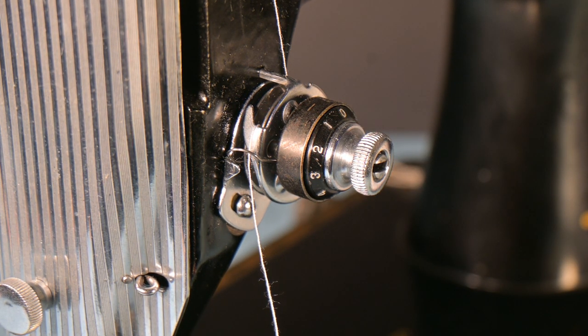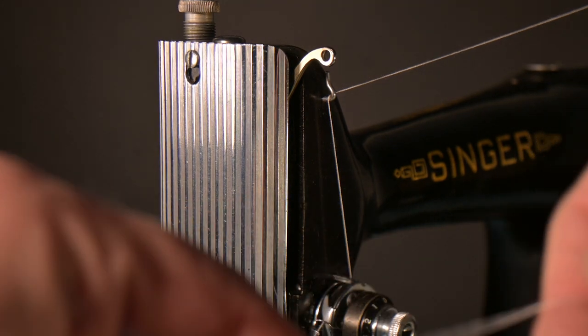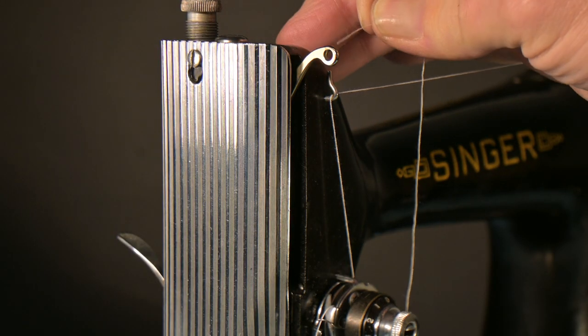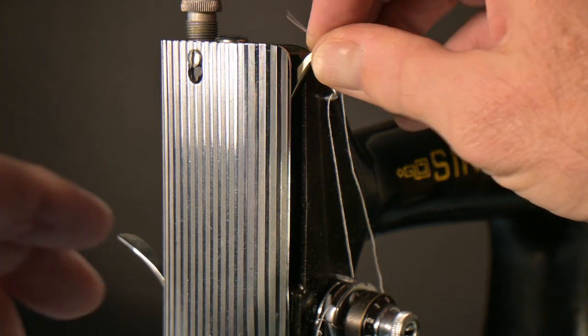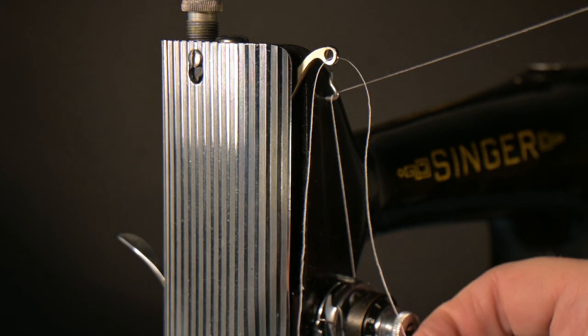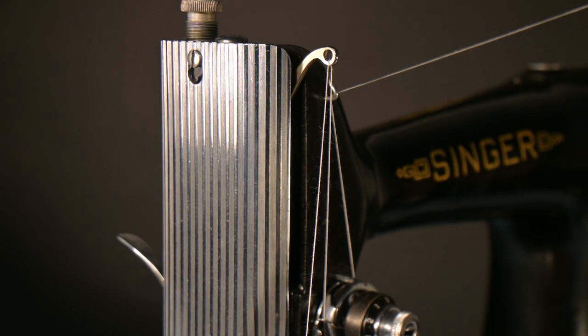And now we're going to take the thread up and put it in to the pickup lever at the top. Here we go. We'll take the thread up and we'll put it through the place in the pickup lever like that. And then we'll pull it. Oopsie daisy. Got to make sure everything stays copacetic. There, so everything's good there.